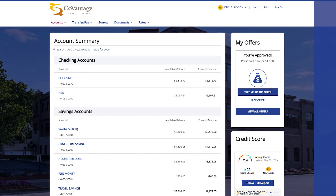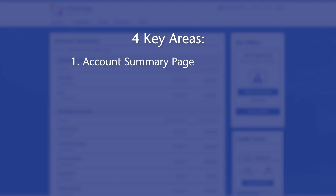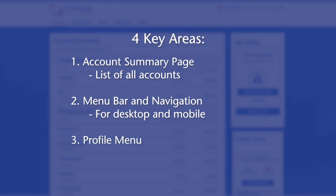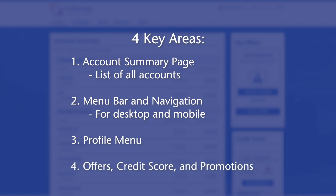In this video we will cover four key areas both in the desktop and mobile experiences. First we will discuss the account summary section. Next we will cover the menu bar and talk about the navigation within our desktop and mobile platforms. After that we will touch on the profile and the actions you can accomplish within that menu. Finally we will talk about offers, credit score, and promotions.